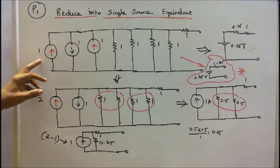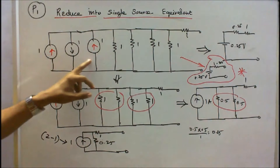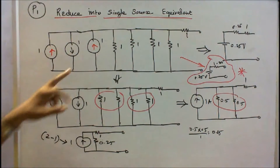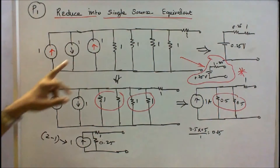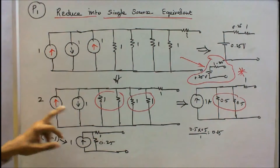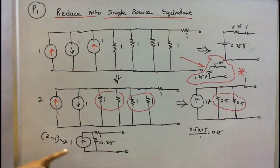See the direction of current. This is 1, this is 1, this is 1. So 1 plus 1 is equal to 2, and 2 minus 1 is equal to 1 amp. This is 1 amp.